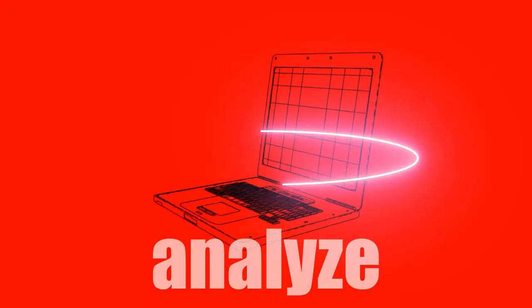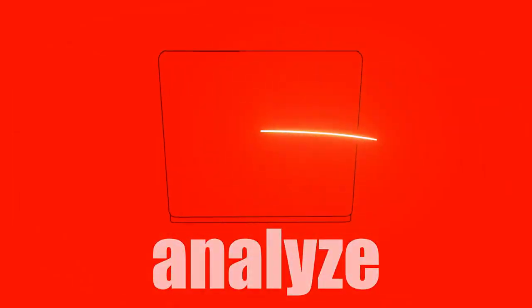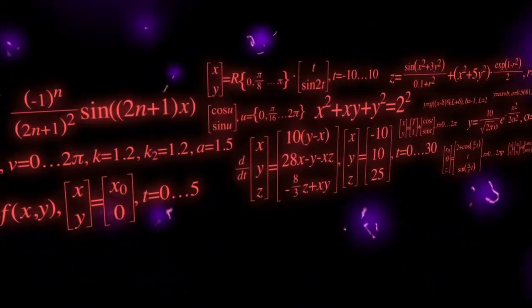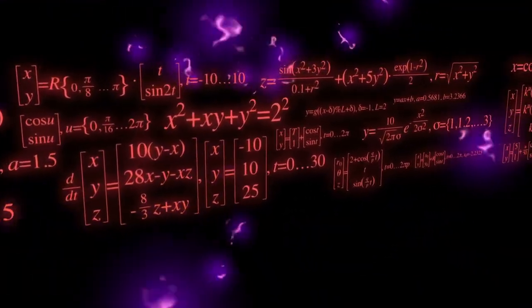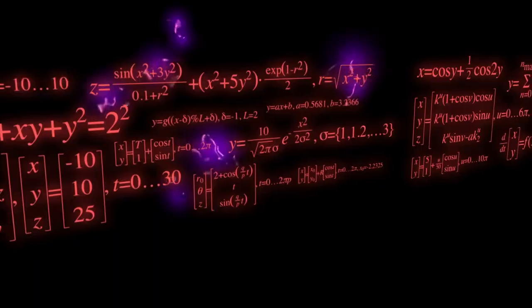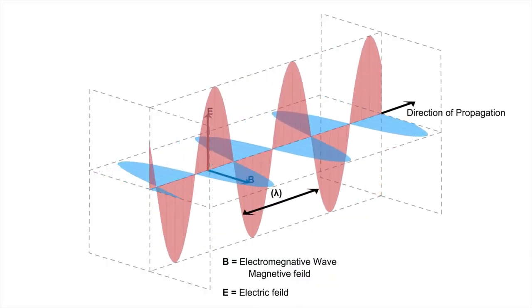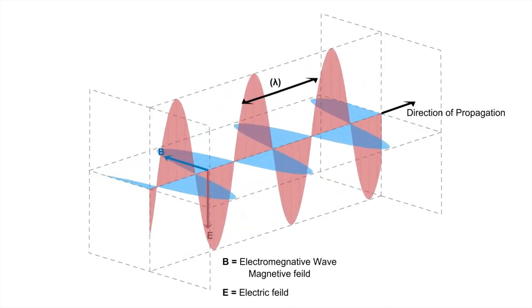Another possibility is that Betelgeuse recently expelled a large amount of mass in a violent outburst, which could have cleared away dust or caused new interactions with its light. In 2019, the star went through an unexplained dimming, possibly caused by a dust cloud blocking part of its surface. This brightening might be a rebound from that earlier event, where new material is now being illuminated.